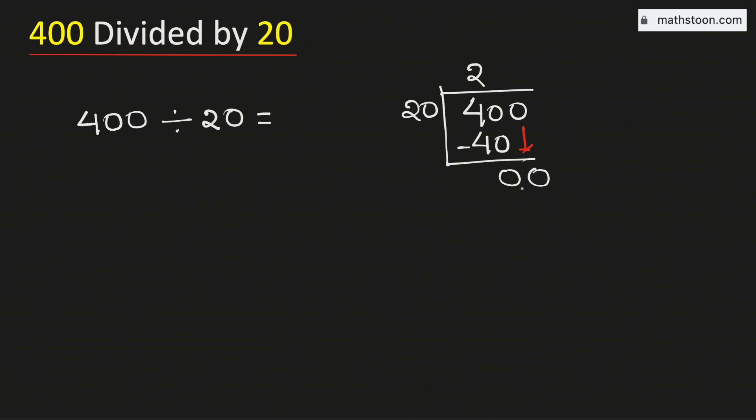Now look that this is the number 0, so we can remove one 0. Now we know that 20 times 0 is 0. If we subtract we get 0.